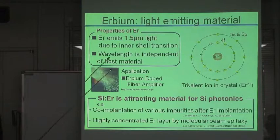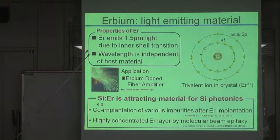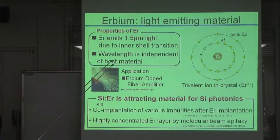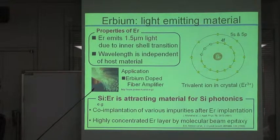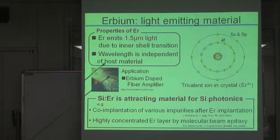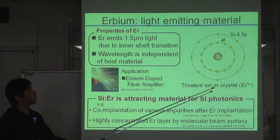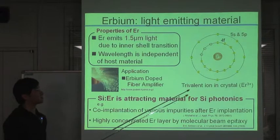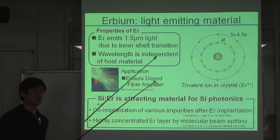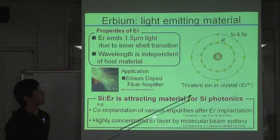As a light-emitting material, Erbium is very interesting in silicon photonics. Here, I introduce the properties of Erbium. Erbium emits 1.5 micrometer light due to its internal transition. This wavelength is the lowest loss in silicon fiber. So Erbium is already applied for the light amplification of optical fiber networks — this is an Erbium-doped fiber amplifier. This is the electron configuration of Erbium ion in the crystal. If Erbium is introduced in the crystal, they become trivalent ions.